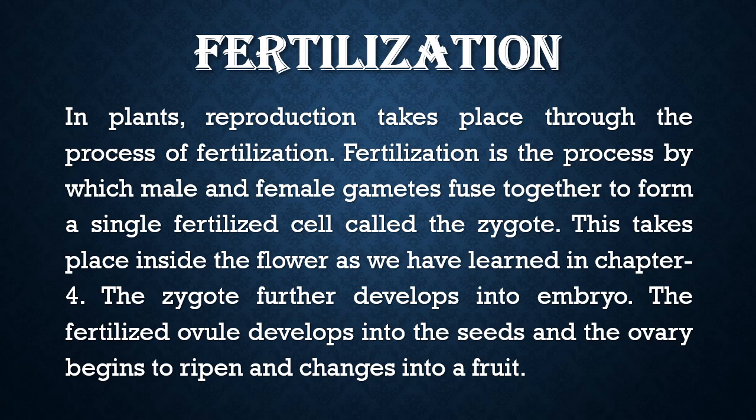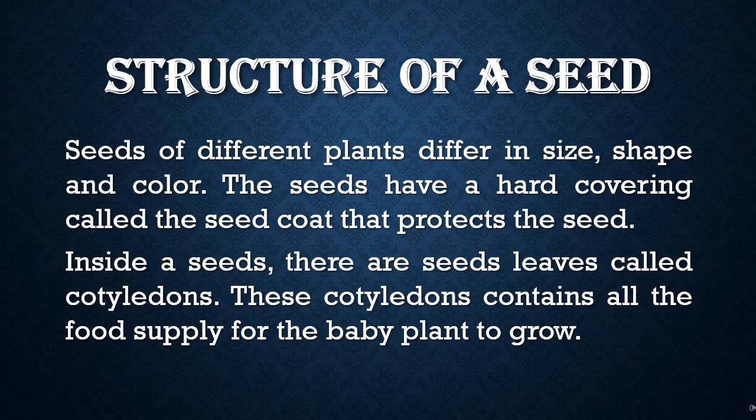The fertilized ovule develops into seeds, and the ovary begins to ripen and changes into a fruit. Structure of a seed: seeds of different plants differ in size, shape, and color.